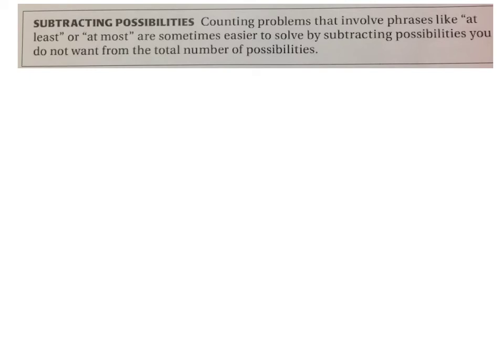The last way we're going to do some combinations is subtracting the possibilities. Counting problems that involve phrases like at least or at most are sometimes easier to solve if we subtract possibilities from the total instead of trying to add up all the different ones.